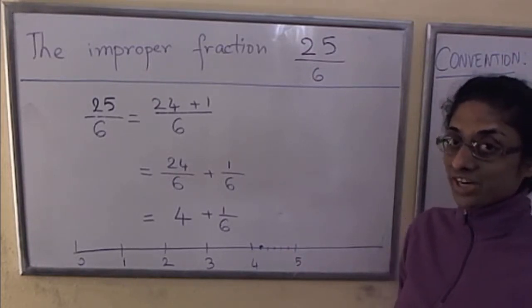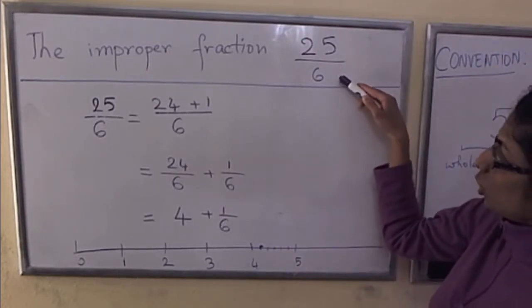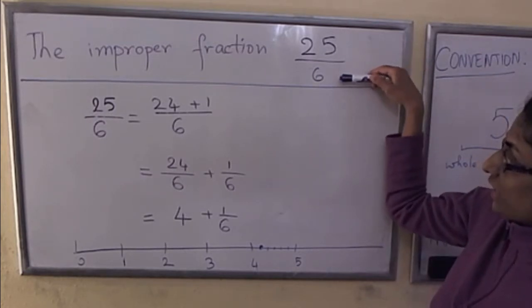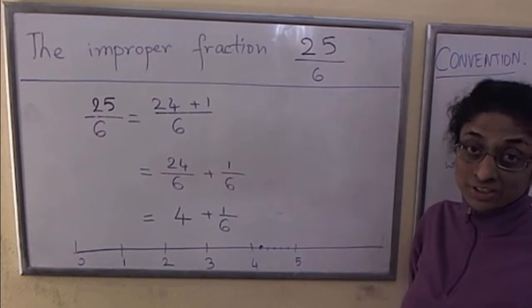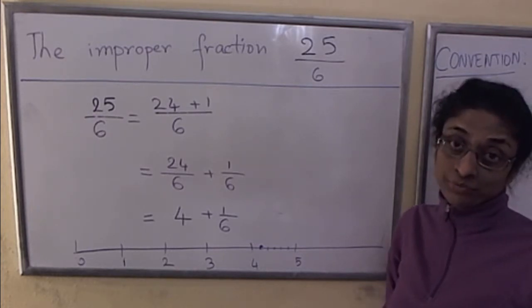Let's now look at the improper fraction 25 over 6. 25 is greater than 6, the numerator is greater than the denominator, so we know 25 over 6 is an improper fraction.